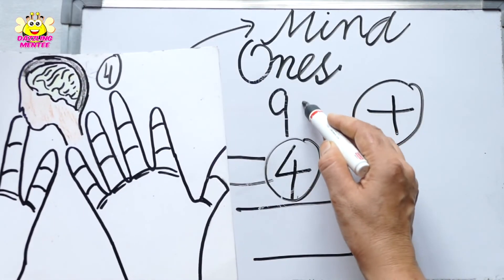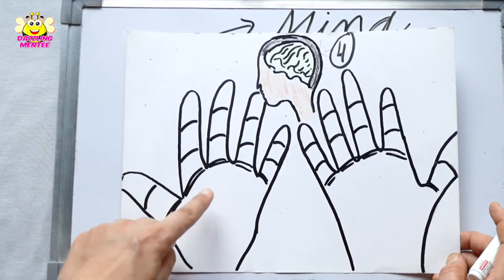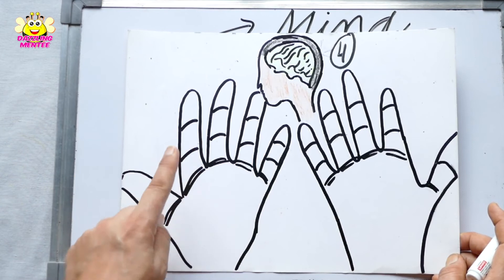The top number is 9. So how many fingers are in front of us? 1, 2, 3, 4, 5.